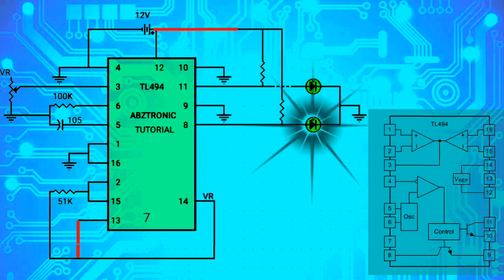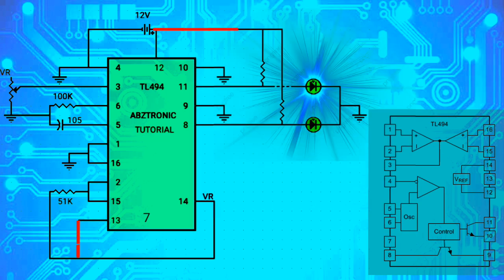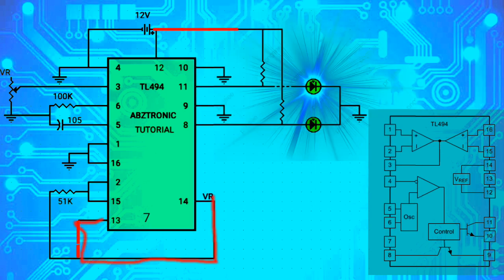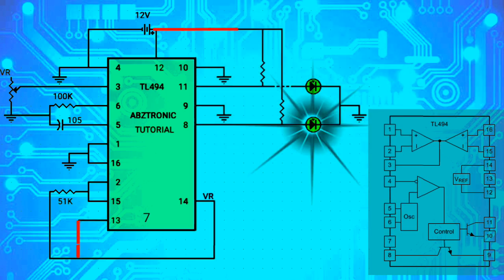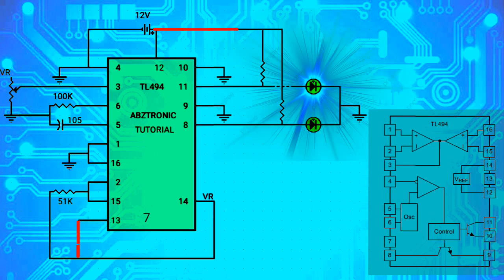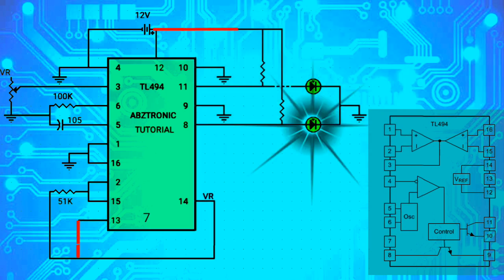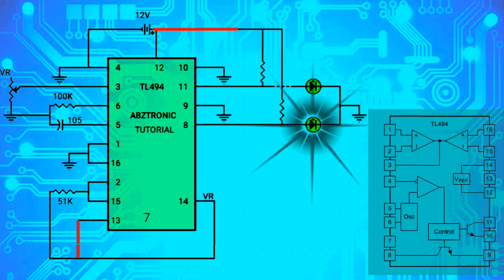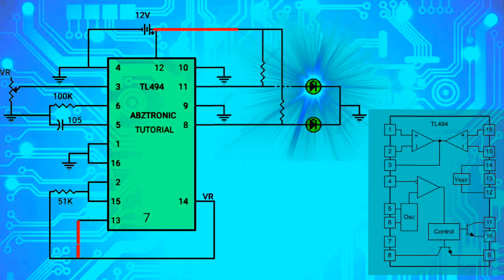The two outputs can be on and off at the same time when pin 13 is connected to pin 14, as you can see right now. This is called parallel output — it means output 1 and output 2 will turn on and off simultaneously.